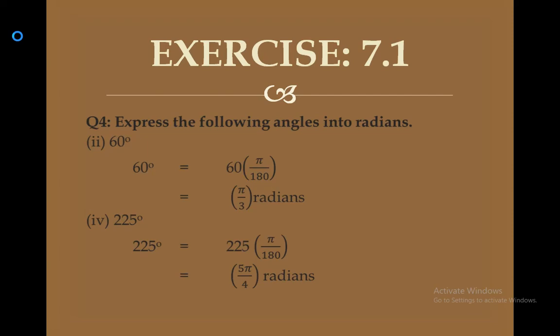Question 4: express the following angles into radians. The rule is 180 degrees equals π radians, so 1 degree equals π/180. For part 1, 60 degrees: multiply by π/180, simplified result is π/3 radians. For part 4, 225 degrees: multiply by π/180 and cancel — the result becomes 5π/4 radians.